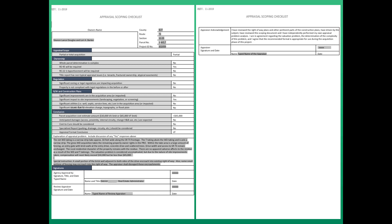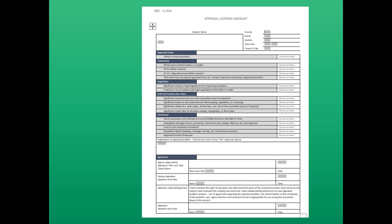The Appraisal Scoping Checklist is a two-page form, pretty standardized, and shouldn't be too difficult to fill out. We're going to start working on the checklist as a continuation of the case study — Parcel 1 of the Butler 73 project that we've been working on in the last several modules.